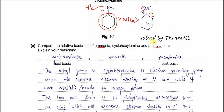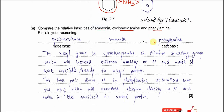So the most basic is cyclohexylamine, followed by ammonia, and then phenylamine, which is the least basic. In your explanation, you just need to explain the most basic and least basic.